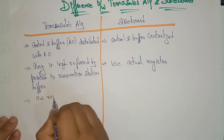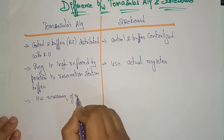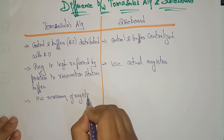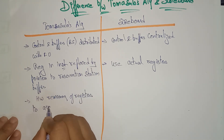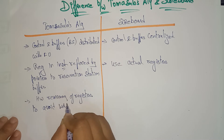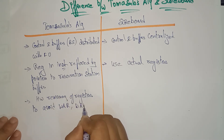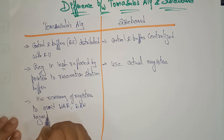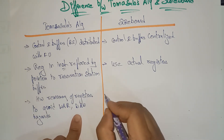In Tomasulo's algorithm, hardware renaming of registers is used to avoid write-after-read and write-after-write hazards.